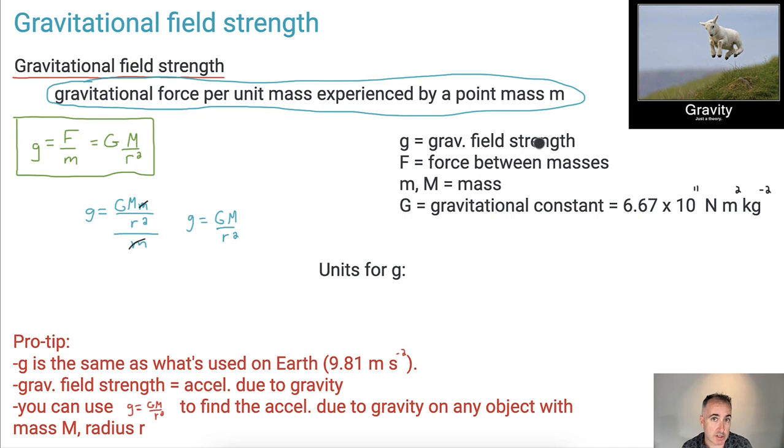Because now we can start looking at some of the units for this. So what should the units of gravitational field strength be? It should be force over mass. So that should be newtons per kilogram.